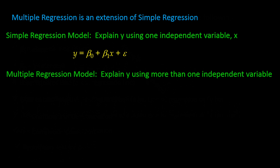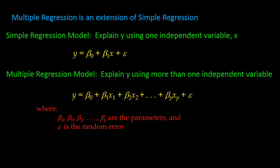The multiple regression model is similar to the simple regression model except that it has more terms in the equation. Those terms represent the parameters for the extra variables: beta-naught, beta-1, beta-2, and so on until beta subscript p are the parameters for the p independent variables. The epsilon represents the error term and accounts for the variability in y that cannot be explained by the model. Since we don't know what that error is, it will drop out when we calculate our predicted y-hat line from a sample.